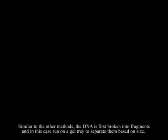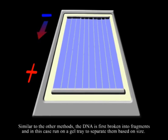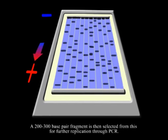Similar to the other methods, the DNA is first broken into fragments, and in this case run on a gel tray to separate them based on size. A 200 to 300 base pair fragment is then selected from this for further replication through PCR.